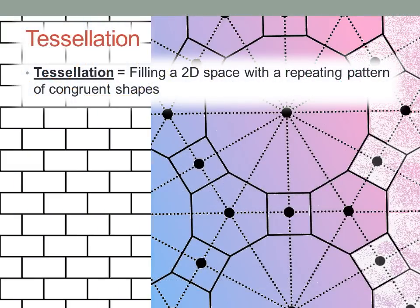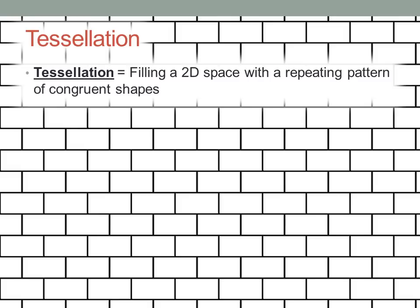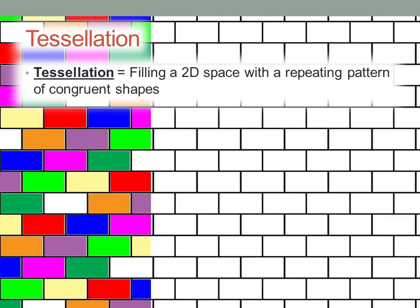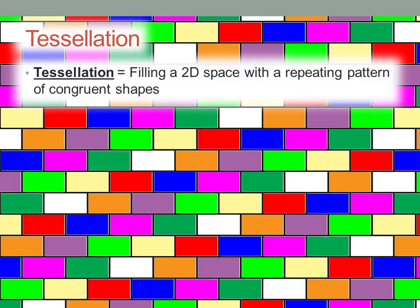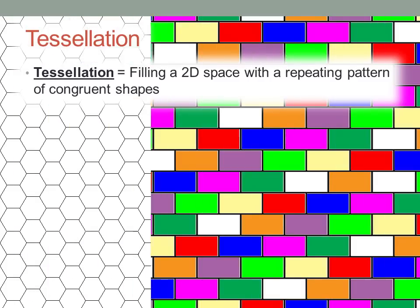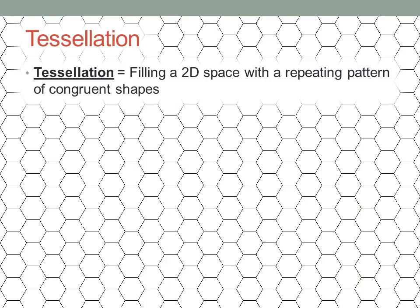Tessellation is all about filling a flat space with multiple copies of congruent shapes in a repeating geometric pattern.